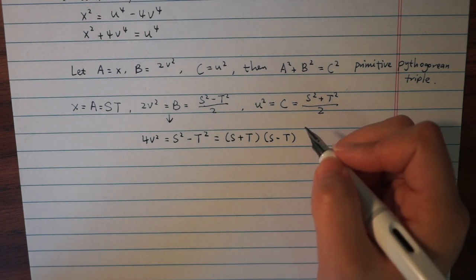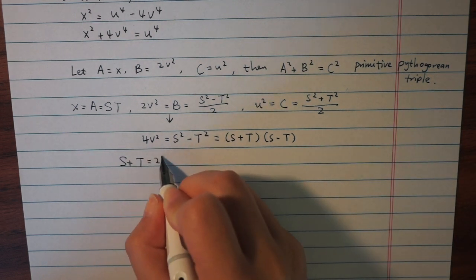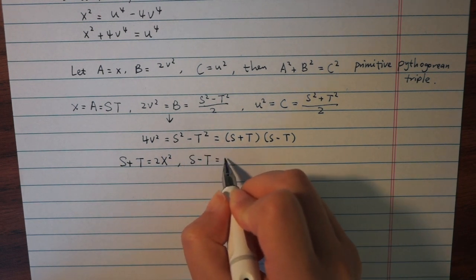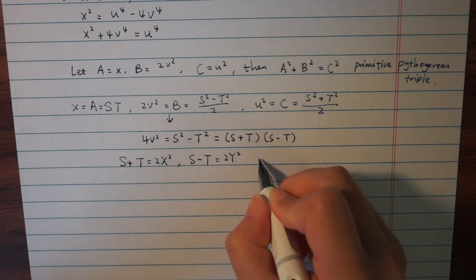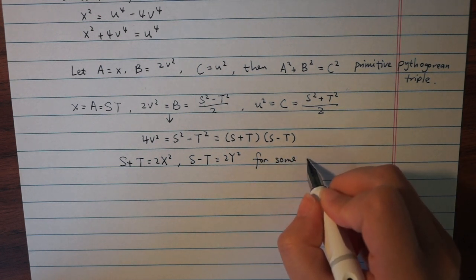Furthermore, their product is a square, so it must be true that S plus T equals 2X squared, and S minus T equals 2Y squared, where X and Y are some integers.